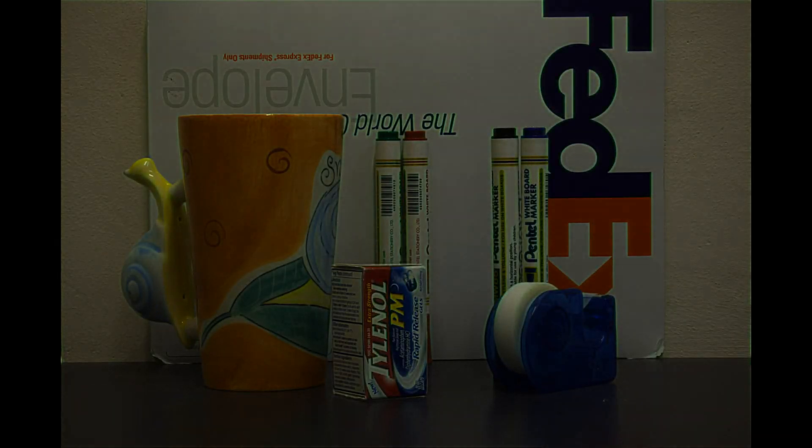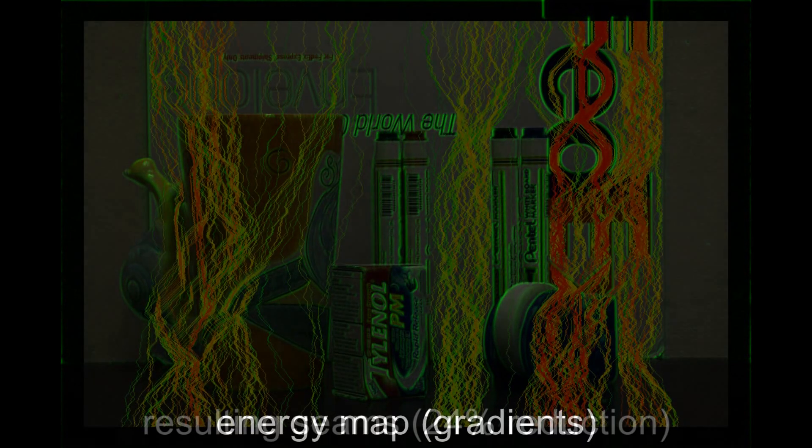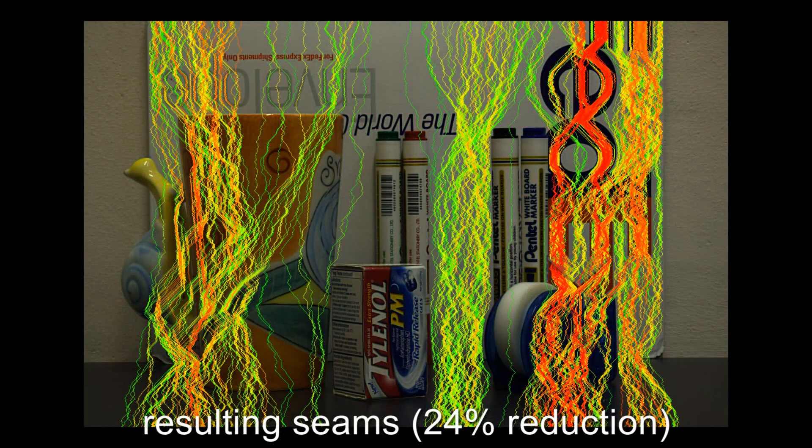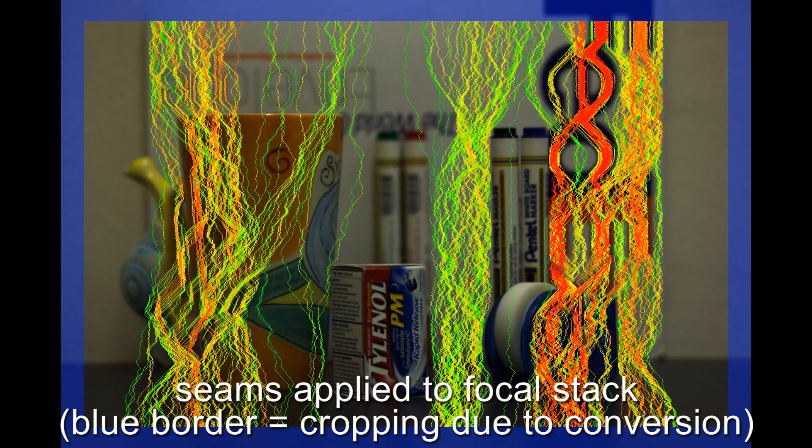We apply seam carving to the central perspective. The seams are derived from an energy map based on the L1 norm of the gradients with forward energy calculations. Since the central perspective matches the perspective of the focal stack, we can remove the same calculated seams in all of its slices without violating angular consistency.